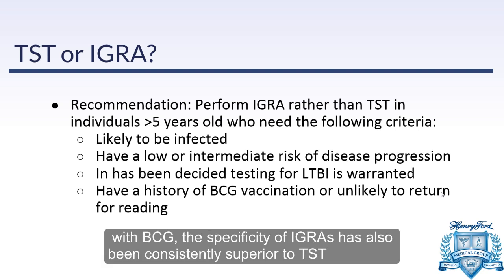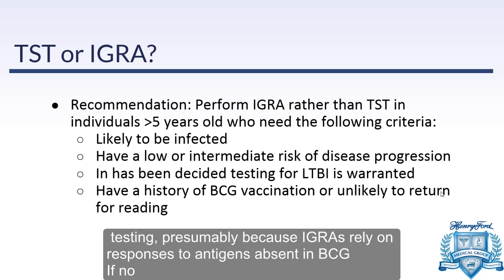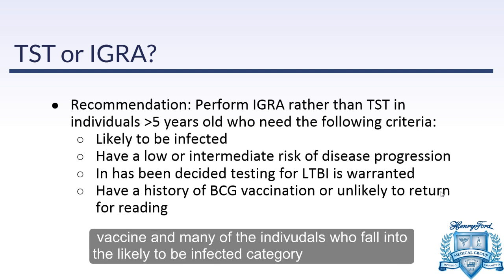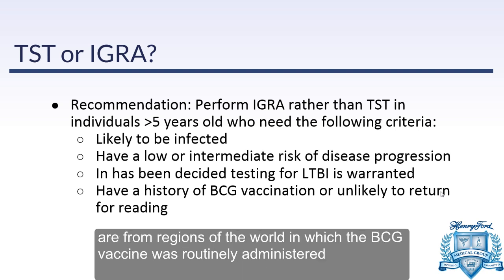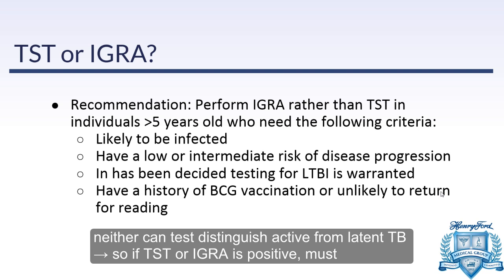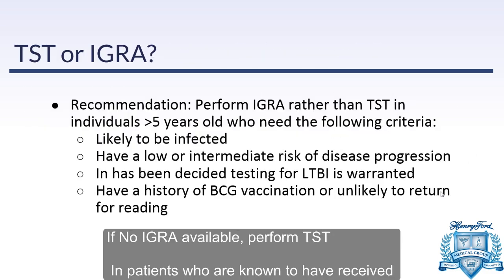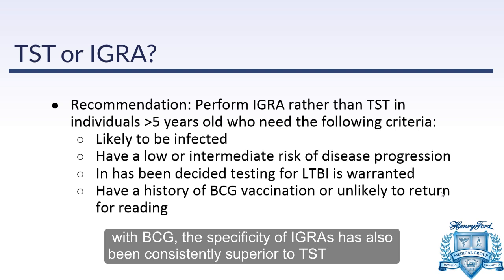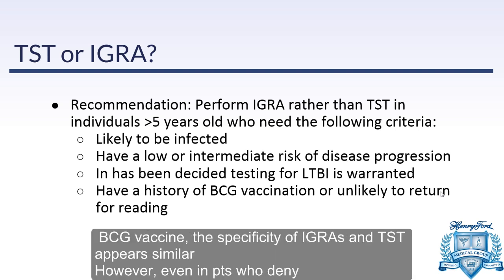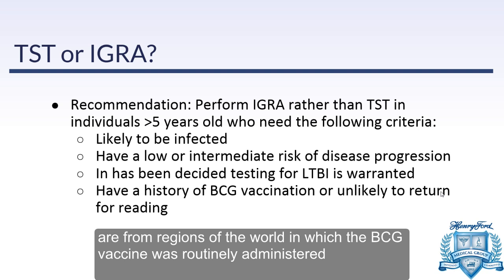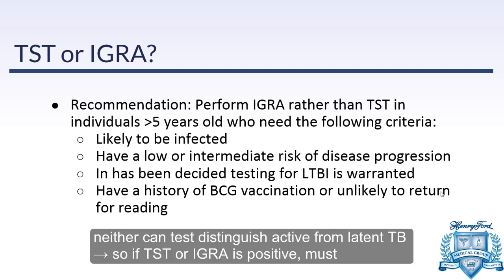Overall, the guidelines recommend performing the IGRA over the TST in individuals greater than five years old who meet criteria: likely to be infected, at lower to intermediate risk of disease progression, or for those with a history of BCG vaccination or unlikely to return for reading. When walking through all the recommendations, if you have the option and affordability, an IGRA is superior — patients don't need to return, and there's less reader variability. But if that's not possible and testing is still warranted, you should still do the PPD.